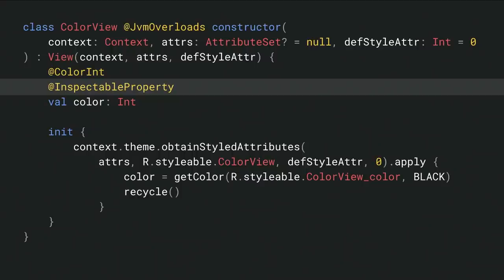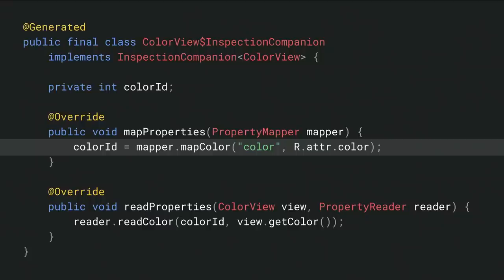The code generation builds an InspectionCompanion — a new API for Q — that sits alongside the view. It has two purposes: first, given a class, it defines the list of properties on that class. Here we've mapped a color with its type, property name, and inferred attribute ID from R.attr. This teaches Studio what properties a view has and what their attribute IDs are, enabling the jump-to-code functionality.